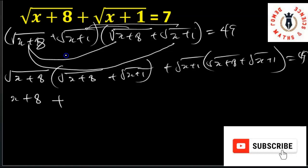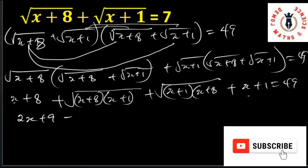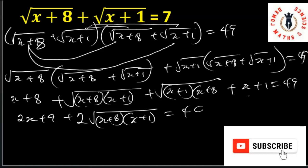Continuing the expansion: root of x plus 8 times root of x plus 8 is x plus 8; root of x plus 8 times root of x plus 1 gives root of (x plus 8)(x plus 1); root of x plus 1 times root of x plus 8 gives the same root of (x plus 8)(x plus 1); and root of x plus 1 times root of x plus 1 is x plus 1. This equals 49. Collecting like terms: x plus x is 2x, and 1 plus 8 is 9, plus 2 times the root of (x plus 8)(x plus 1) equals 49.